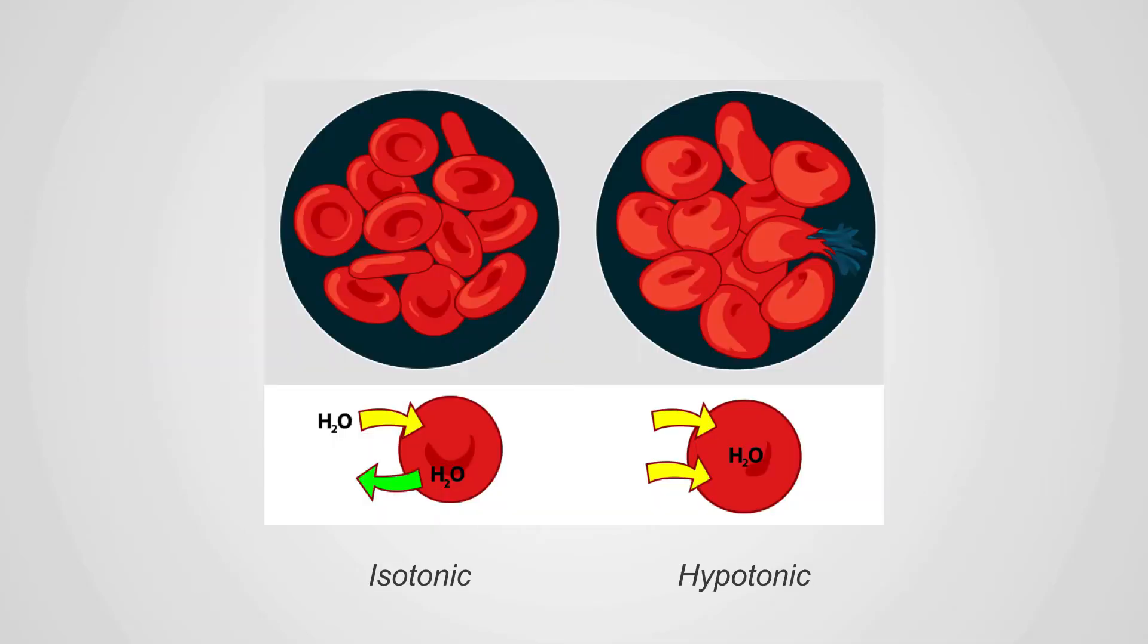when the plasma becomes hypotonic, and the red cells become relatively hypertonic. Water rushes into the cells, causing them to swell, and if it's severe enough, the cells can rupture, causing hemolysis. This is a result of osmosis, drawing water from a low concentration to a high concentration.